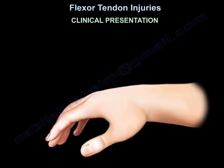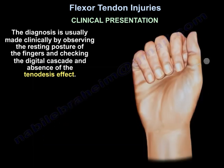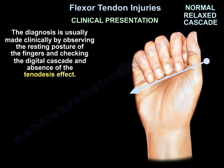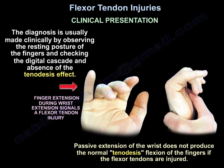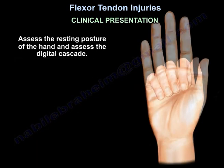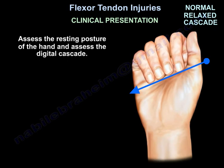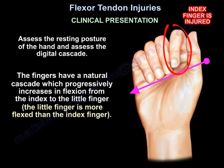In the clinical presentation of flexor tendon injuries, diagnosis is usually made clinically by observing the resting posture of the fingers, checking the digital cascade, and assessing the absence of the tenodesis effect. Passive extension of the wrist does not produce normal tenodesis flexion if the flexor tendons are injured. The fingers have a natural cascade that progressively increases in flexion from the index to the little finger.